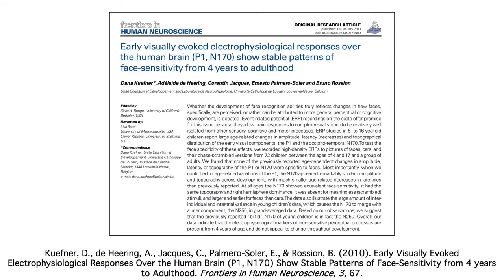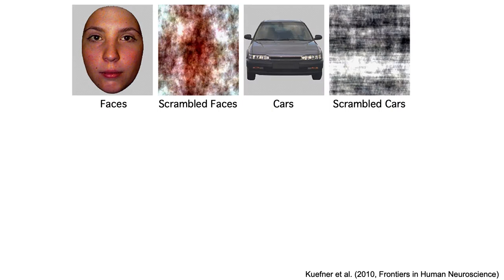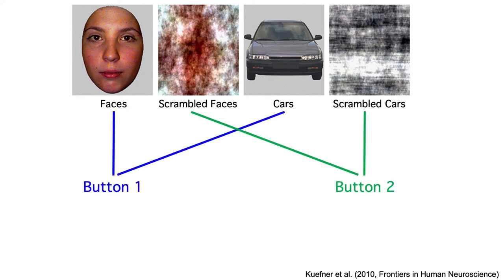To distinguish between a developmental change in face-specific processing and a developmental change in other non-specific processes, Kufner et al. ran the experiment shown here. They showed subjects a randomized sequence of faces, cars, scrambled faces, and scrambled cars. To keep the subjects alert and attentive, they had subjects press one button for faces and cars, and another button for scrambled faces and scrambled cars. It wasn't an oddball paradigm — all four stimulus categories occurred equally often.